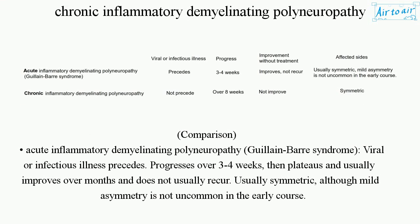Comparison: Acute inflammatory demyelinating polyneuropathy, or Guillain-Barré syndrome, is preceded by a viral or infectious illness. It progresses over three to four weeks, then plateaus and usually improves over months, and does not usually recur. It is usually symmetric, although mild asymmetry is not uncommon in the early course.